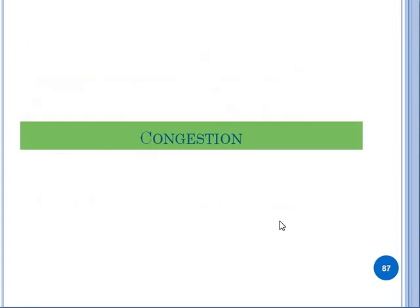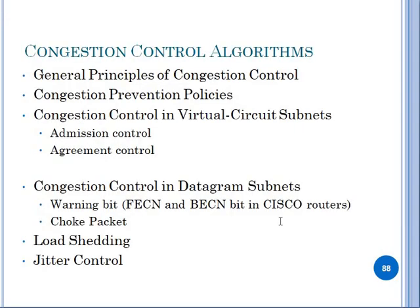Next is congestion. Different kinds of algorithms are used to control congestion when traffic is generated in a network. To control traffic, we use different algorithms. The topics include general principles of congestion control, policy, congestion control in virtual circuit subnet, congestion control in datagram subnet, load shedding, and jitter control.